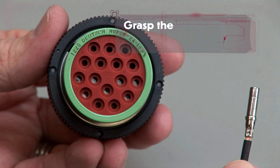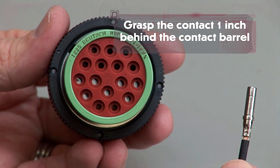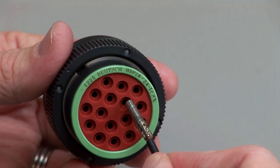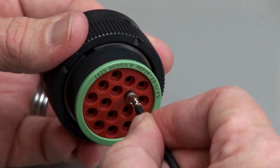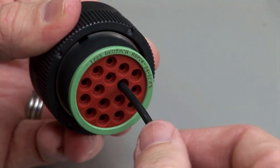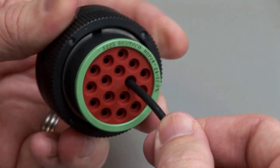Grasp the crimped contact approximately one inch behind the contact barrel. Hold the connector with the rear grommet facing you. Push the contact straight into the rear grommet until you hear and feel a click. A slight tug will confirm that the contact is properly locked into place.